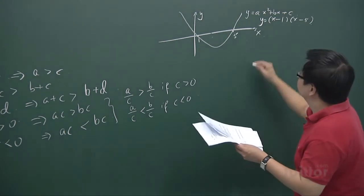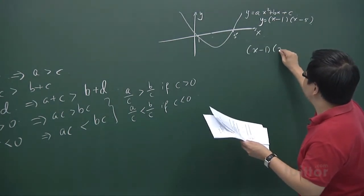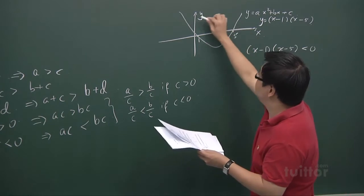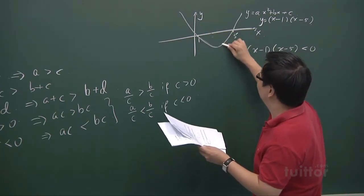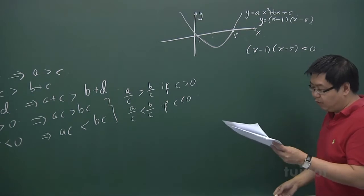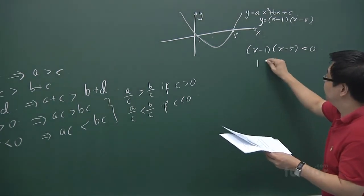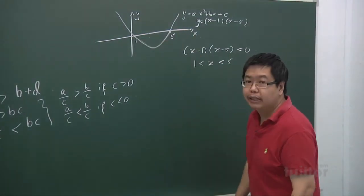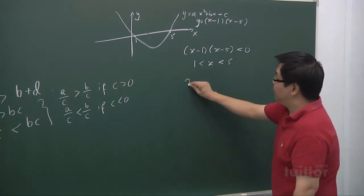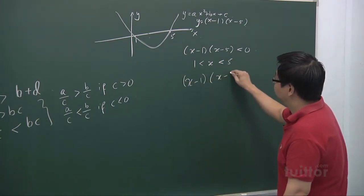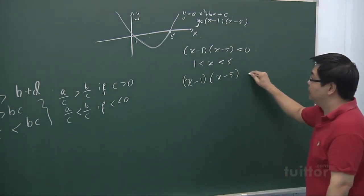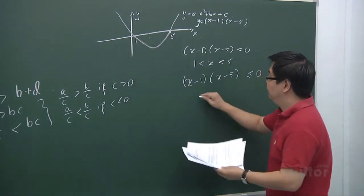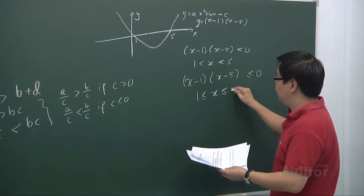If we want to solve the quadratic inequality (x−1)(x−5) < 0, it means we are looking at the part of the graph which is below the x-axis. That means we are looking for x between 1 and 5. If we want (x−1)(x−5) ≤ 0, we include the two points 1 and 5, so x is between 1 and 5 inclusive.